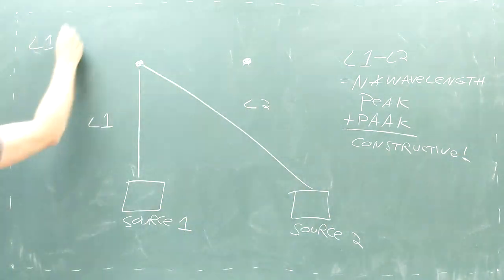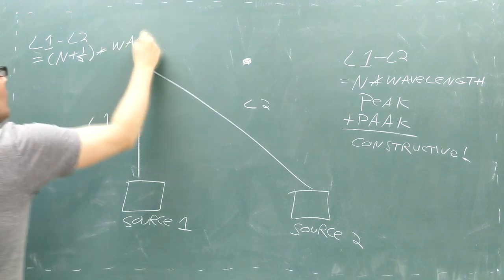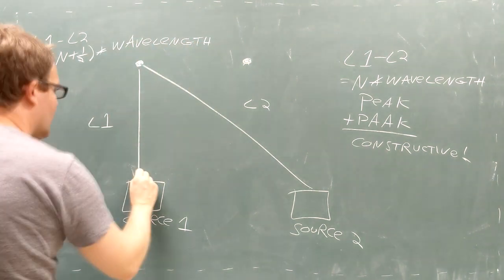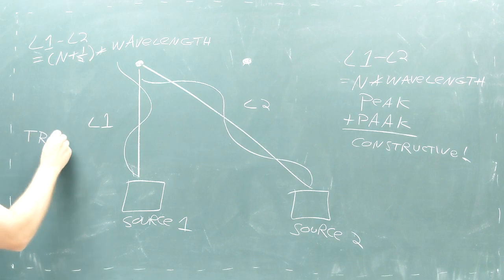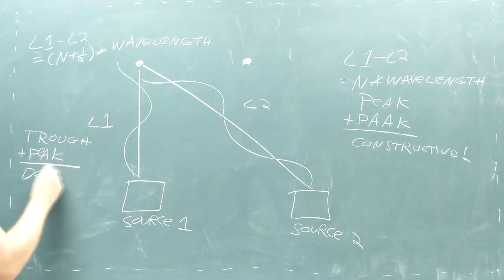However, if L1 and L2 differ by a whole number plus a half times the wavelength, then the two waves are overlapping at a peak and a trough, and we have destructive interference making a weaker wave.